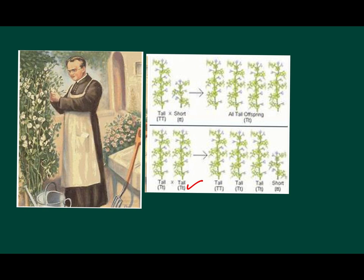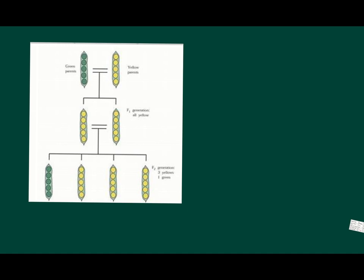He crossed the tall plants together that he collected from the first generation. He found that the short characteristic reappeared again but was in a smaller ratio. The ratio was 3 to 1.